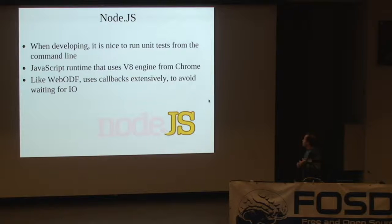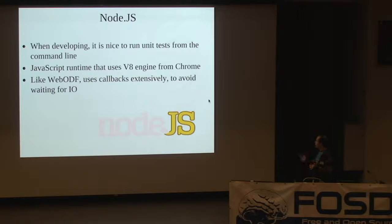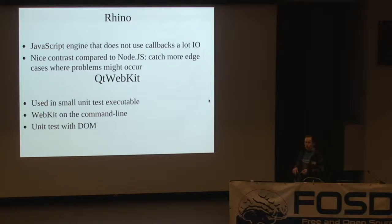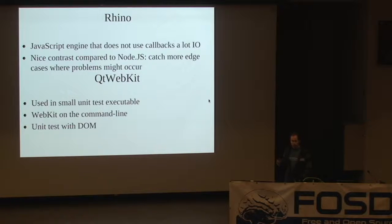Node.js is a V8 engine — the JavaScript engine in Chrome — and it uses callbacks extensively, so it's very good for a server. We're also using Rhino, which is a slow JavaScript engine that doesn't use callbacks. The reason we use it is because it's so different — callbacks need special attention, and you need to make sure you don't need a callback result before leaving the current execution loop. We're also using Qt WebKit because neither Node.js nor Rhino has a DOM, and we'd like to do DOM testing on the command line with Qt WebKit running with no user interface.